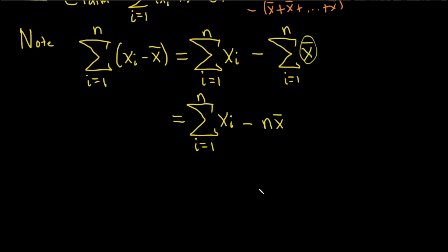Okay, so this is equal to the sum as i runs from 1 to n of x sub i minus n. And then x bar is the mean, right, it's the mean. So the formula for x bar is basically 1 over n times the sum of the x i's.